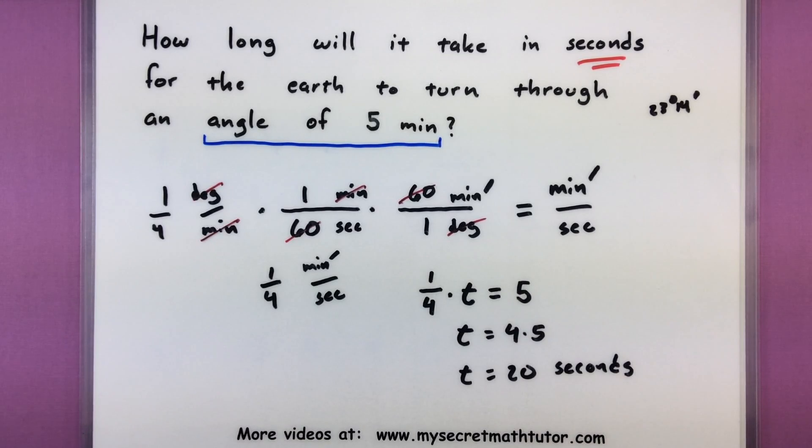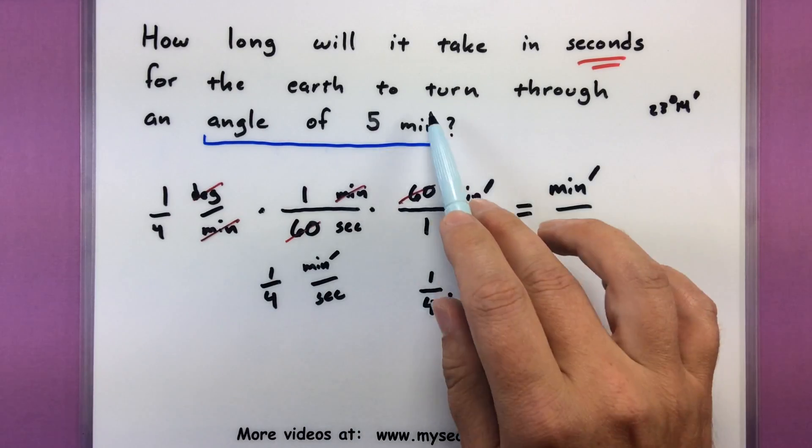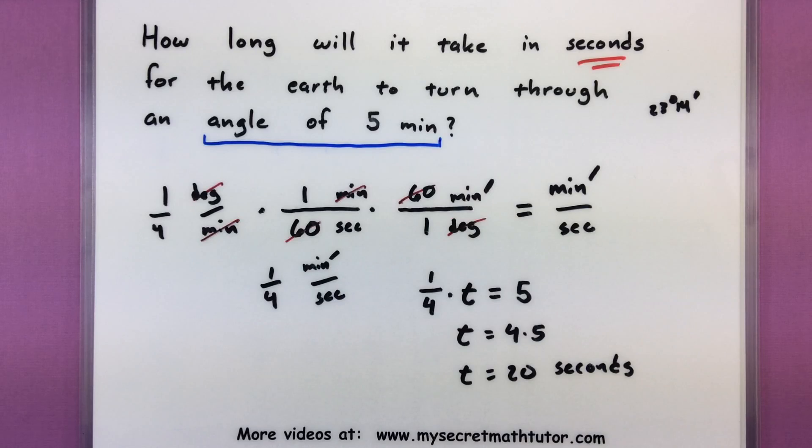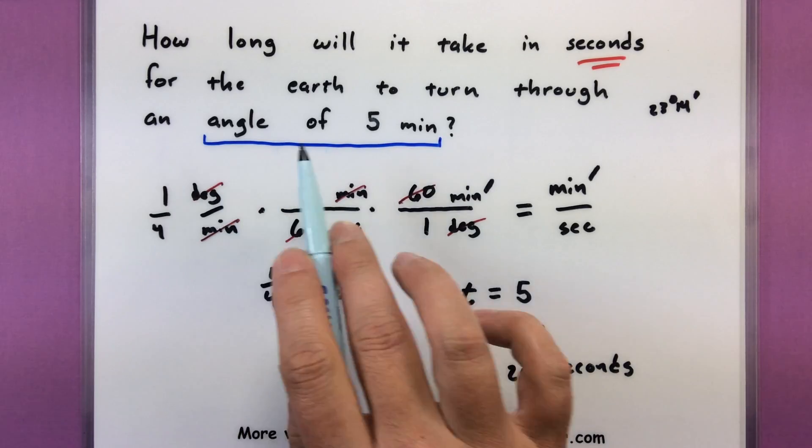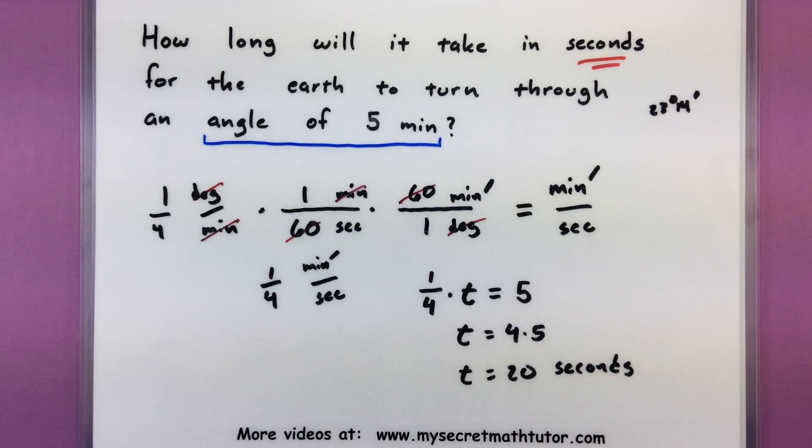So this one was a little bit trickier. We had to start off with some information about the rotation of the earth and convert it into minutes per second. But once we had this rate, then we could go ahead and figure out the time that it needed to run for it to move through a total distance of five minutes. And of course, be very careful for problems like this. Your clue is if it says an angle of five minutes rather than a time of five minutes. Two completely different problems.